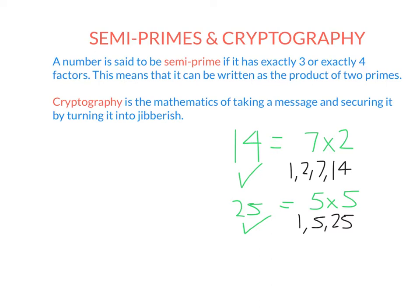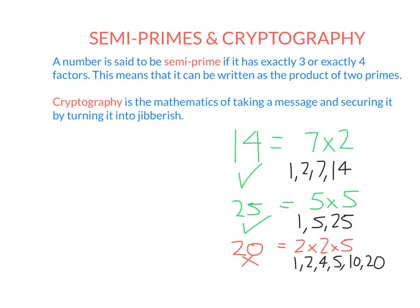Now let's look at examples of numbers that are not semi-prime. 20 is not semi-prime. Written as a product of primes, it's 2 times 2 times 5 — I need three prime numbers multiplied together to get 20. The factors of 20 are 1, 2, 4, 5, 10, and 20. Because it has six factors, it is not a semi-prime number.